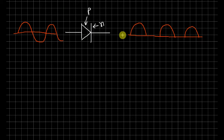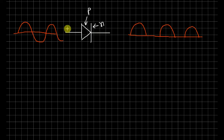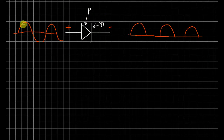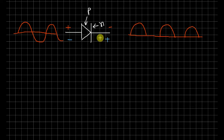During rectification: when we are in the positive half cycle, the diode's P-type is positive and N-type is negative, so the diode is forward biased and passes the positive half cycle. During the negative half cycle, the P-type is negative and N-type is positive — that is reverse bias — so the diode blocks current flow.